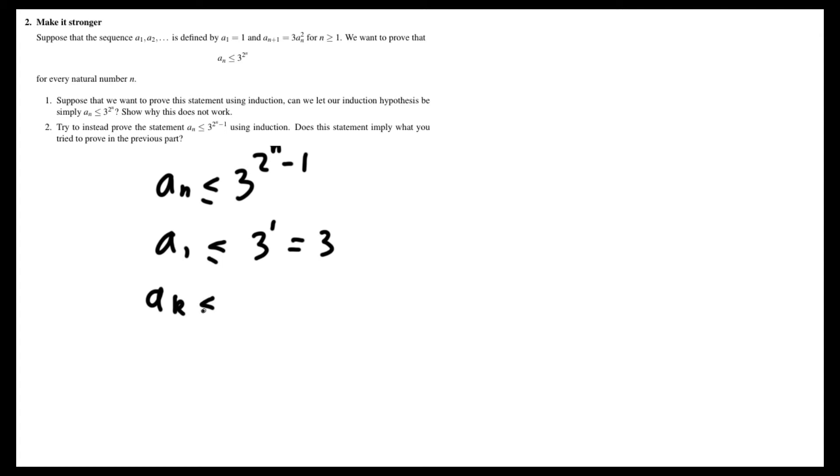Then assuming that aₖ is less than or equal to 3 to the 2ᵏ⁻¹, that implies that aₖ₊₁, which is equal to 3 times aₖ squared, is less than or equal to 3 times (3 to the 2ᵏ⁻¹) squared, which is equal to 3 times 3 to the 2(2ᵏ⁻¹), which is equal to 3 to the 2ᵏ⁺¹⁻¹.